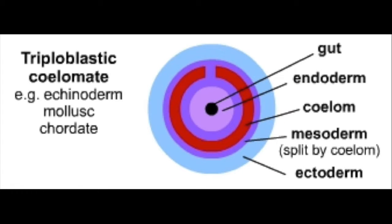The rhino beetle is triploblastic. This means it has an endoderm, an ectoderm, and a mesoderm.